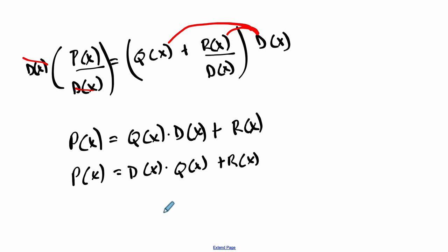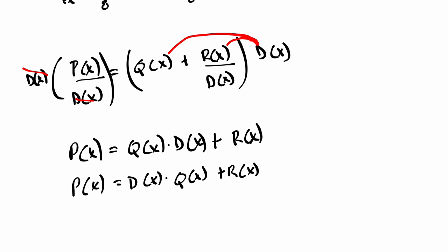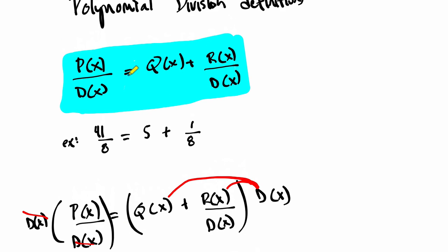And commonly switch this around by writing the polynomial equals the divisor times the quotient. I tend to write it more this way, plus the remainder of x. It doesn't really matter which order you choose, but the important thing is to recognize that this is another form in which we can write polynomial division, these two things right here, versus this one as well.